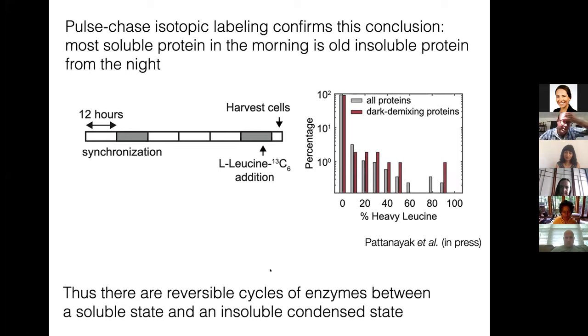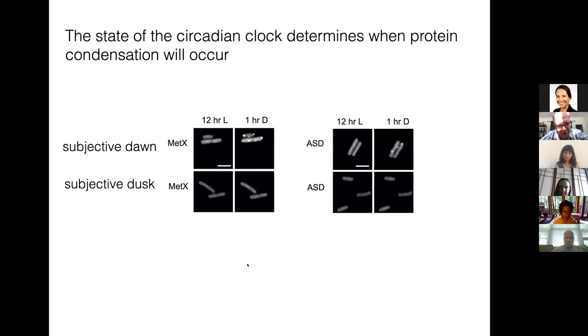So there's a reversible cycle of enzymes between soluble and insoluble, which makes us think that this is regulated in some way. The first is that it turns out the state of the circadian rhythm determines when this protein condensation will occur. These are side-by-side examples. If you put the cells into the dark when they're supposed to go into the dark, it takes them a while for these proteins to condense. But if you put the cells in the dark at the wrong time, it happens very rapidly.